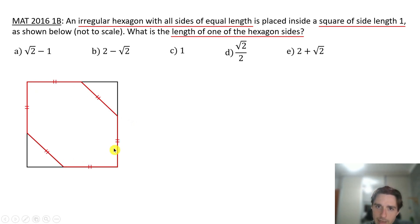So the first information is that we have an irregular hexagon with all sides of equal length. The second information is that the side of the square has length one, and the question is asking us to find the side of the hexagon that we are going to call x. So we have to find x. How are we going to proceed?